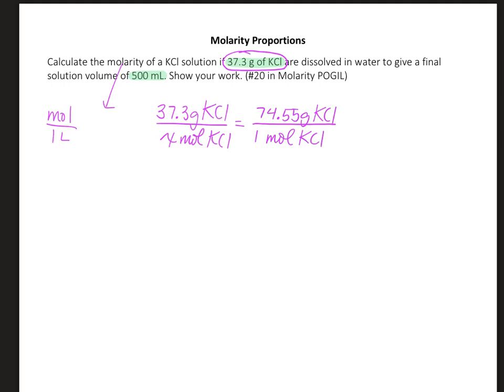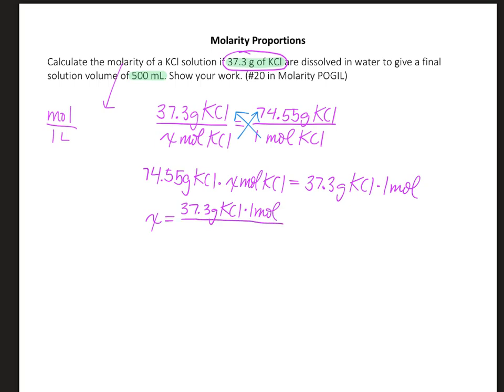Now that we have this, we're going to cross multiply and divide to solve. So I'm looking at 74.55 grams KCl times X moles equals 37.3 grams KCl times one mole. I'm going to divide by 74.55 to get it to the other side. So my X is going to be 37.3 grams KCl times one mole divided by 74.55 grams KCl, which equals 0.500 moles of KCl.